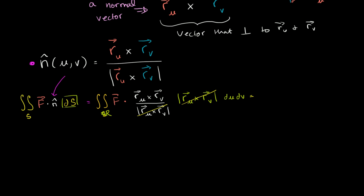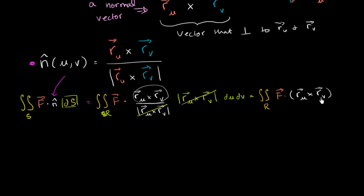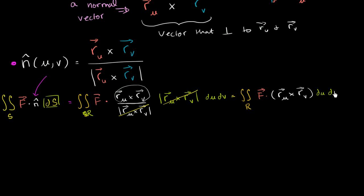And our integral simplifies to the double integral over the corresponding region in the uv plane of F — our vector field F — dotted with the cross product. The cross product gives us a normal vector, and dotting F with that and integrating gives us our result. So we take the dot product of F with the partial of r with respect to u crossed with the partial of r with respect to v, du dv. We'll see in a few videos that this is essentially how we go about calculating these things: if you have a parameterization, you can get everything in terms of a double integral in u and v.